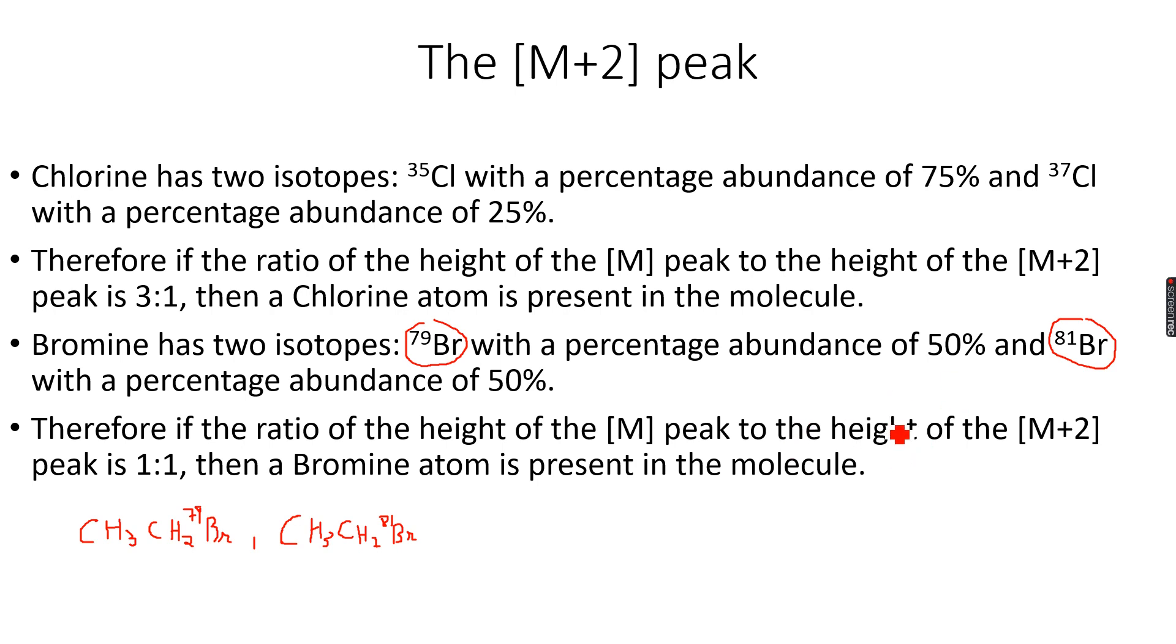These are the two possible isotopes. Both of them are almost equally abundant—actually it's not exactly 50:50, more like 49:51, but for A-levels we can consider this as 50:50. This means both exist in equal proportions in nature, so these two molecules are equally likely to occur.